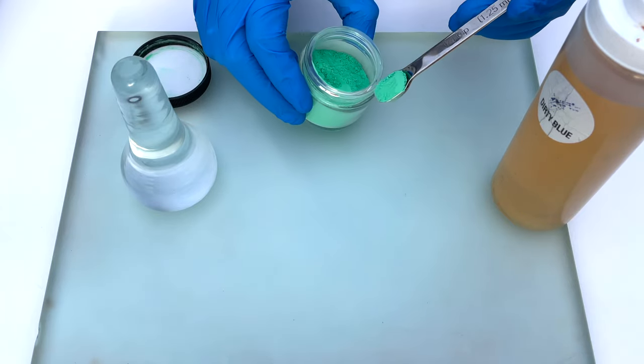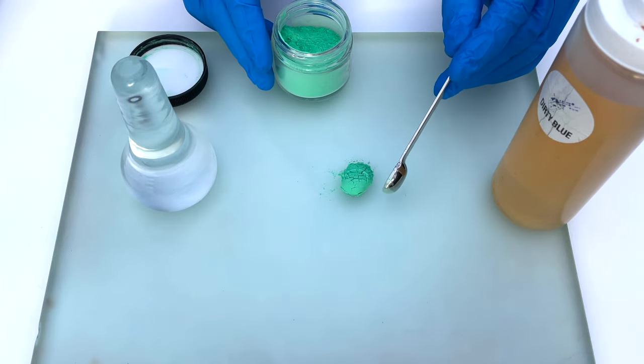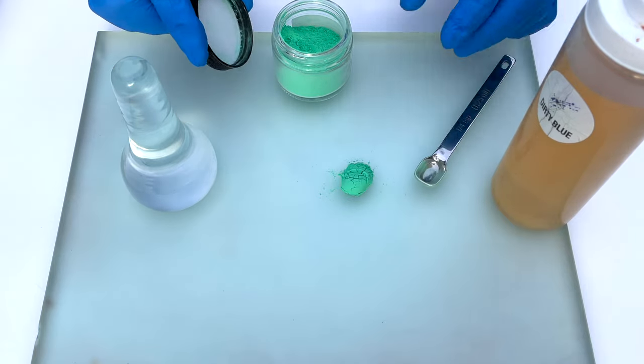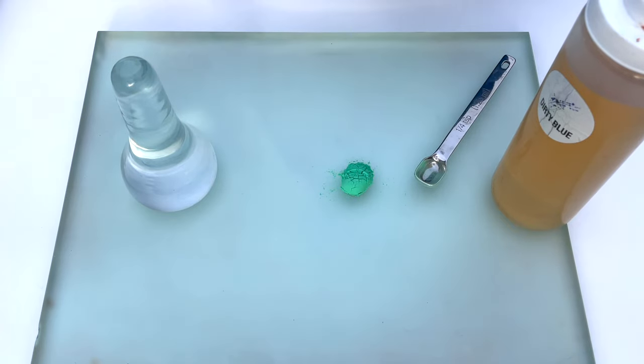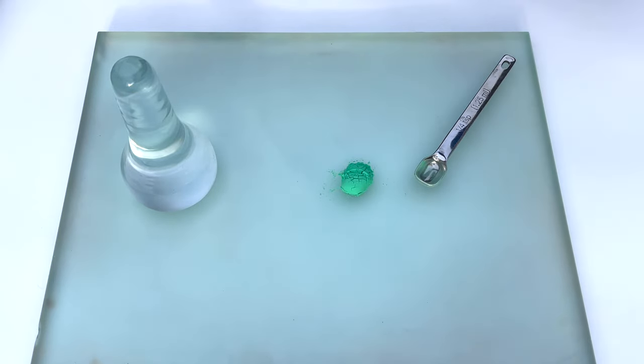It's the history of this pigment that makes it so interesting. Before the 1800s, there weren't that many bright green pigments to work with. You could mix a green with a yellow and a blue, but when it came to single pigments, you had verdigris, malachite, and sap green, which all weren't very bright or vivid.